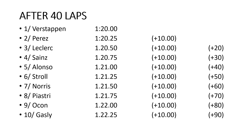After 40 laps, each competitor is now 10 seconds apart — 10 seconds between first and second, between second and third, and so on. Gasly in 10th is 90 seconds behind the leader. If Verstappen is lapping at 1 minute 20, that is 80 seconds per lap. So if Gasly is 90 seconds behind him, that is more than 80 seconds — meaning Gasly is now lapped. Ocon in 9th is 80 seconds back, so Verstappen has either just lapped him or is about to.